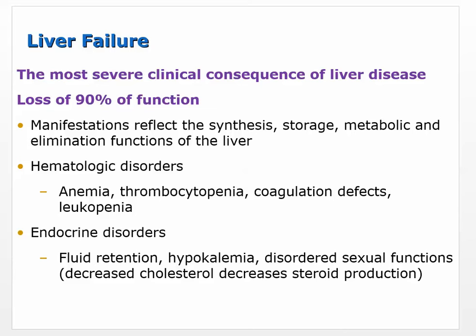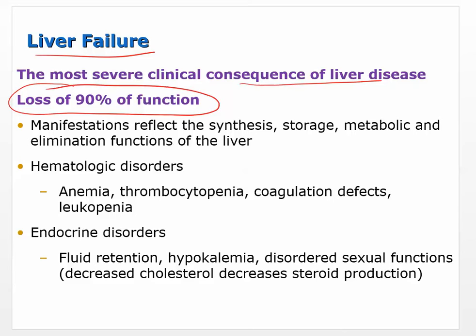Liver failure is the most severe clinical consequence of liver disease, and it occurs when you've lost 90% of function. It's almost overwhelming — the liver makes proteins for clotting, immune factors like complement, deals with fat and glucose, makes clotting factors, and more. So manifestations reflect all of the synthesis, storage, metabolic, and elimination functions of the liver. When you've lost 90% of function, you're going to have some deficits.